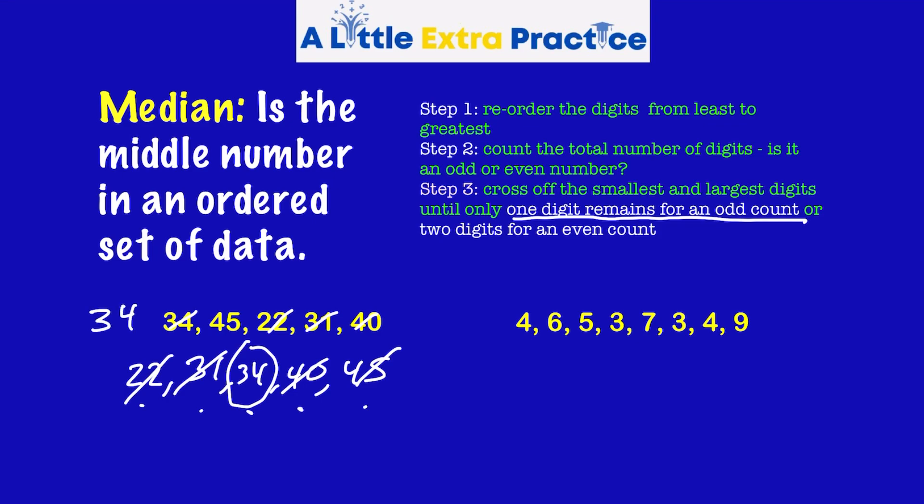Let's take a look at this other set of data. Step one, reorder the digits from least to greatest. Okay, there's two threes, two fours, five, six, seven, and finally a nine.